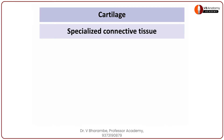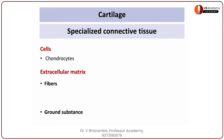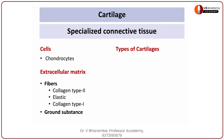Cartilage, as you know, is a specialized connective tissue. If it is a connective tissue, it must contain cells and extracellular matrix. Which cells? Chondrocytes. What is extracellular matrix made up of? It is made up of fibers and ground substance. Which fibers? Collagen type 2, elastic, and collagen type 1. Accordingly, there are three types of cartilage: hyaline cartilage, elastic cartilage, and fibrocartilage.